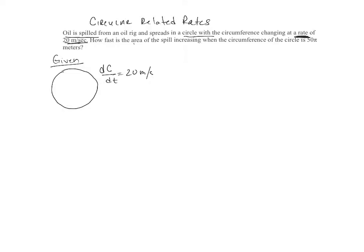So the area of the spill increasing. So dA dt is what I don't know, and that's what I need to solve for when the circumference of the circle is 50 pi meters. So we have a circumference of 50 pi, and I want to know at the instant that this is 50 pi, what the area is changing if the circumference is changing at 20 meters per second.